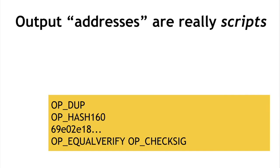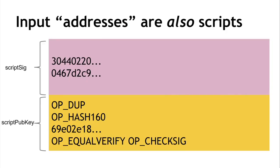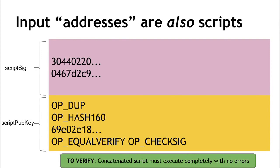The input address is also a script — a bit of script that you combine with the output address by simply concatenating them, giving you one script that has to run successfully to claim a Bitcoin. These two scripts are traditionally called scriptSig and scriptPubKey. In the simplest case, the output script specifies a public key and the input script specifies a signature made with that public key. When a transaction is being validated, the two scripts get pasted together and run. If the concatenated script runs without any errors, this is considered a valid transaction.